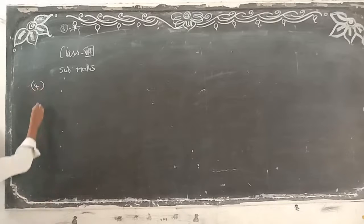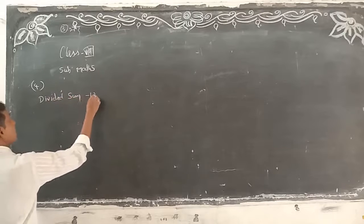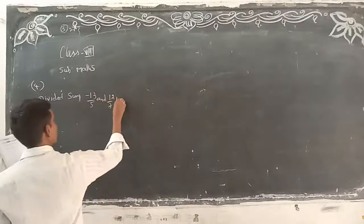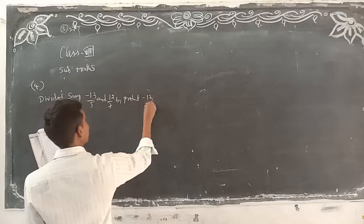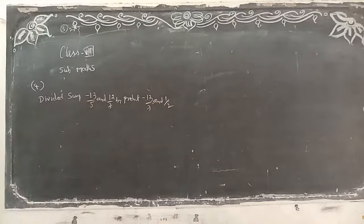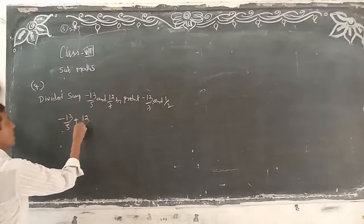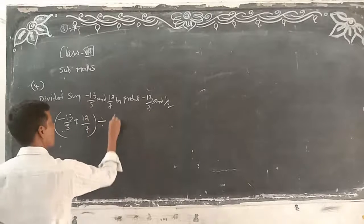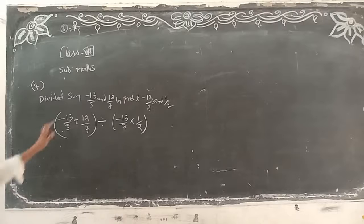What is the fourth one? Divide the sum of minus 13 by 5 and 12 by 7 by the product of minus 13 by 7 and 1 by 2. You have to divide the sum of minus 13 by 5 plus 12 by 7, divided by the product of minus 13 by 7 into 1 by 2. This is the problem. Look here — sum of these two, divide with the product of these two.